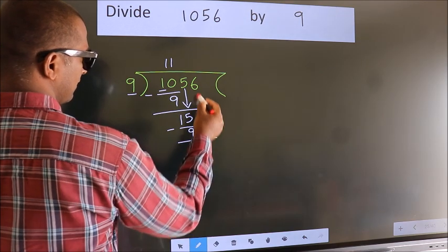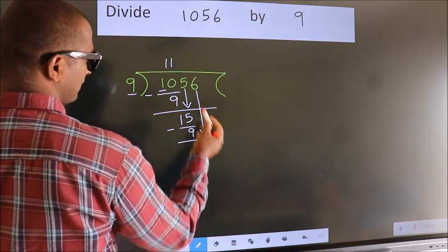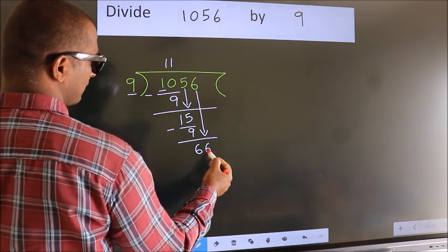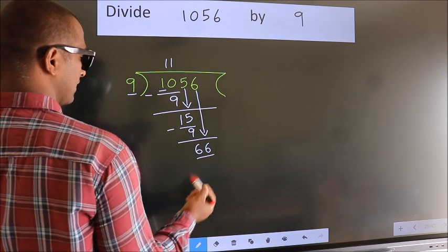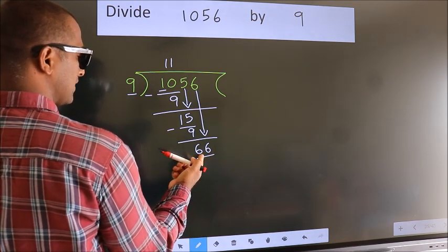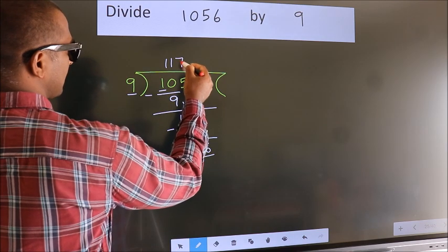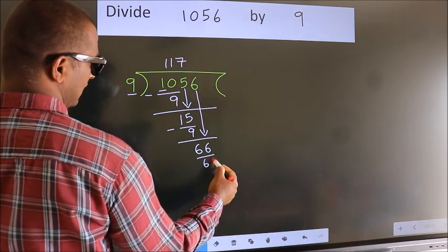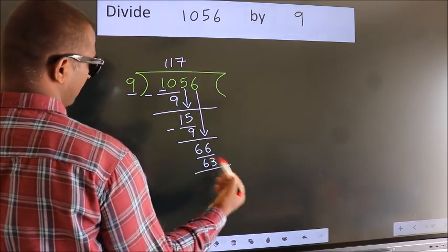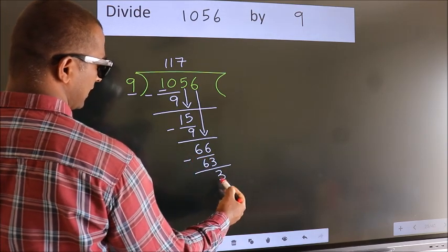After this, bring down the next number. So, 6 down. So, 66. A number close to 66 in the 9 table is 9 sevens, which is 63. Now we subtract. We get 3.